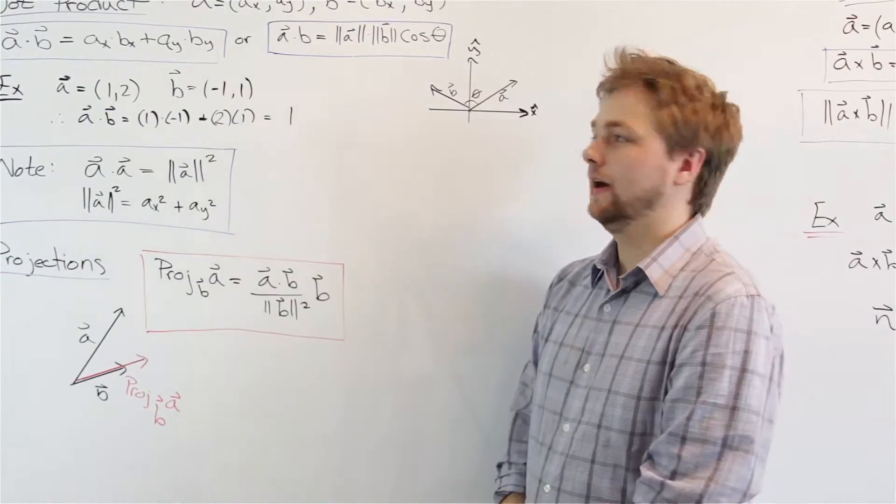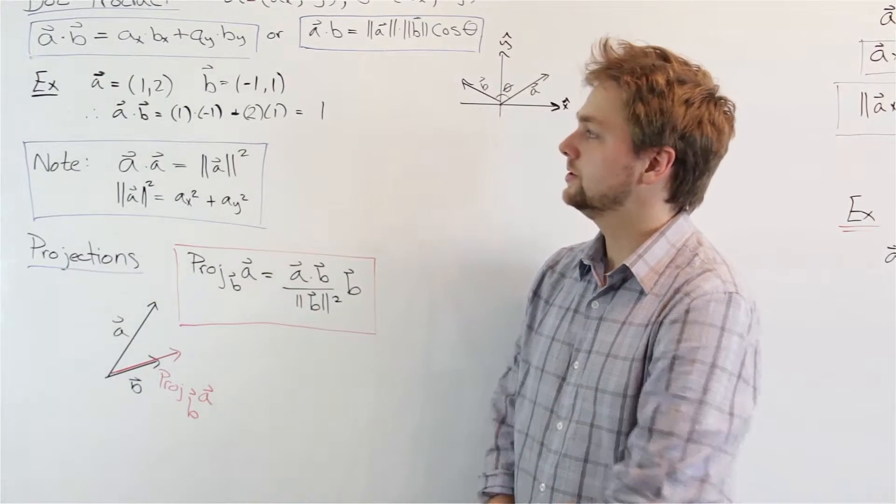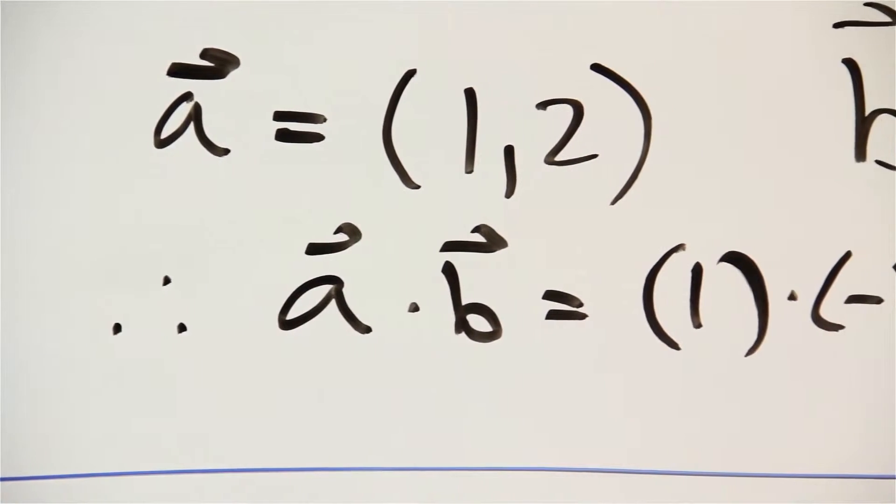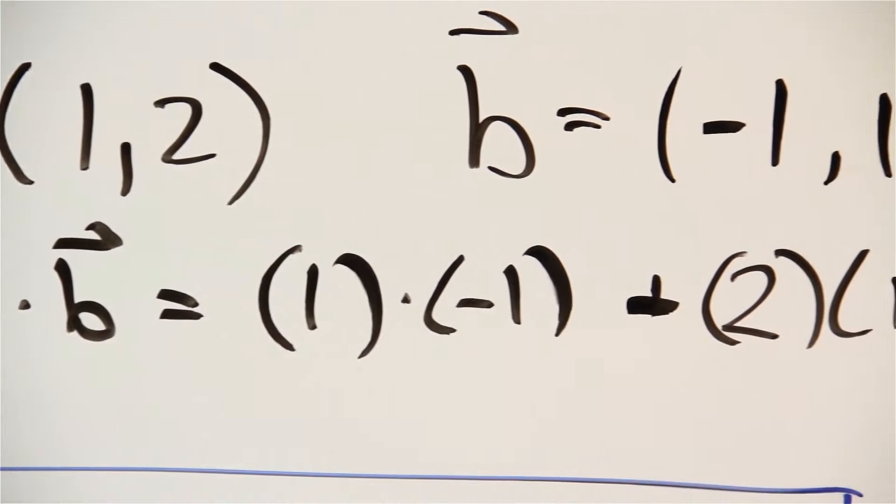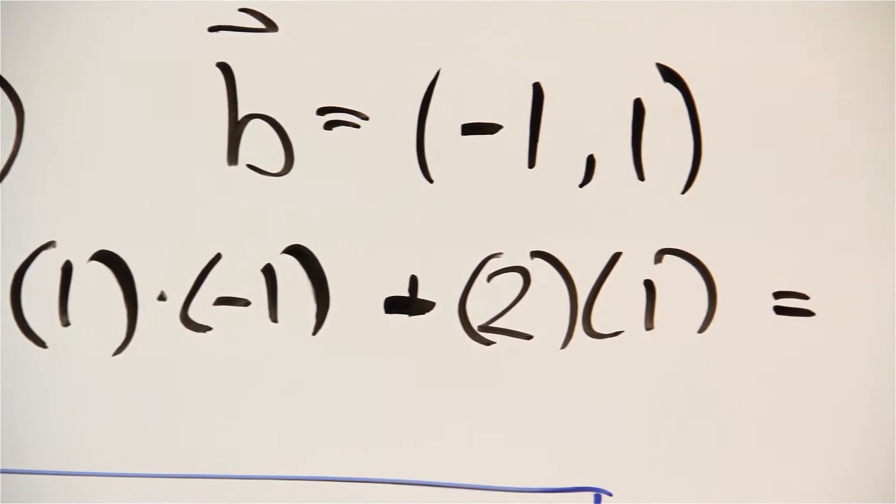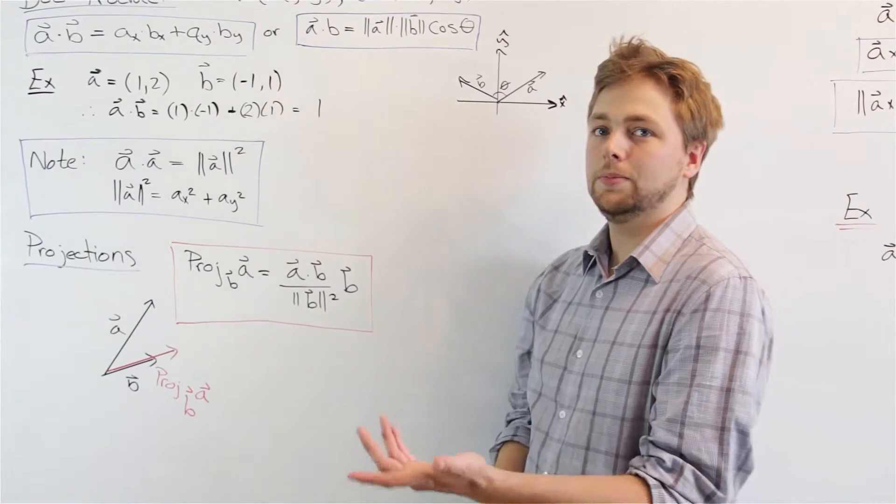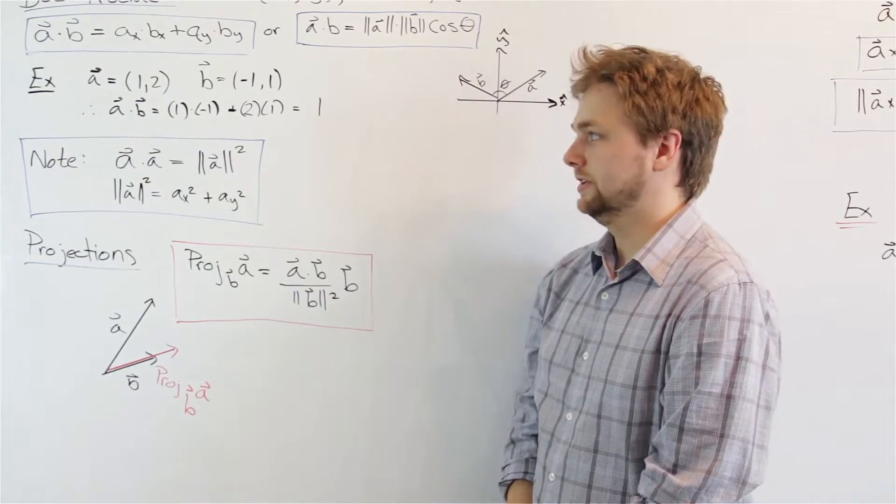Let's take a look at a simple example of how this might be used. If we have vector a, which is (1, 2), and vector b, which is (-1, 1), and we wanted to find out the dot product, we could plug into our formula, either formula, but in this case it would be easier to use formula 1. So, we determine that the dot product is 1. Now, this may or may not be intuitive. The dot product is hard to interpret in some situations.